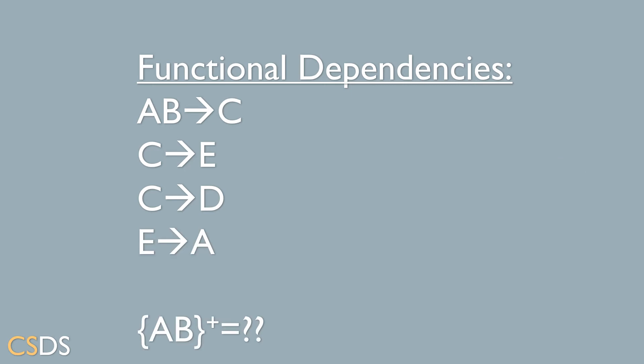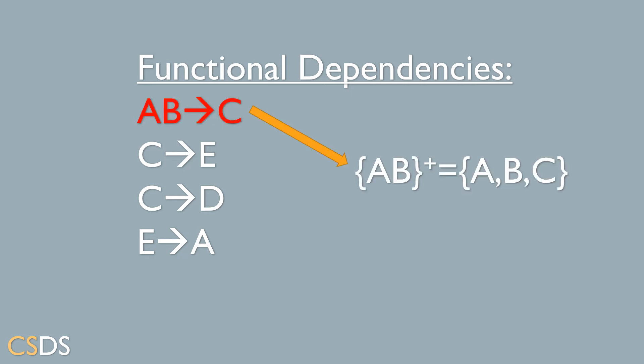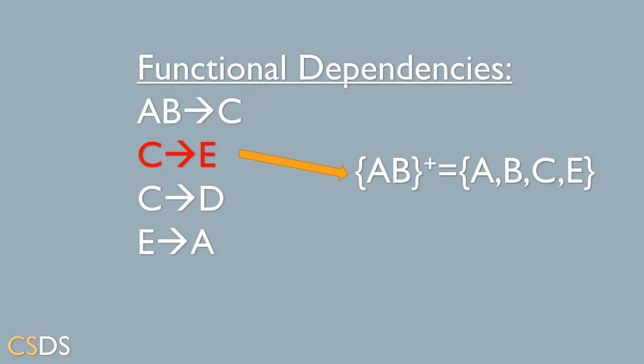Now let's do another example — let's find the closure of the pair of attributes AB. From the first functional dependency AB goes to C, we can determine C. So we will add AB and C to the closure of AB. After checking all the functional dependencies that go from the attributes of the closure we are checking, we will go to the attributes we found in the closure and check them one by one.